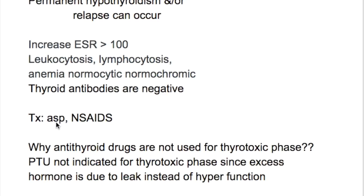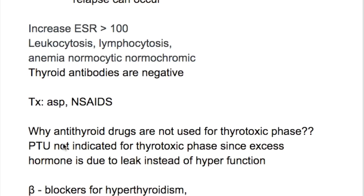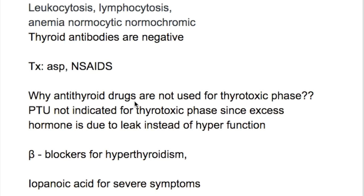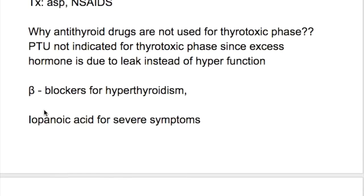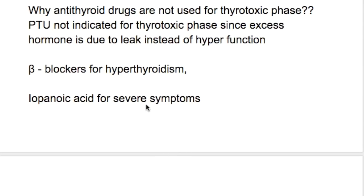Treatment is aspirin and NSAIDs. Why are antithyroid drugs not used for the thyrotoxic phase? Antithyroid drugs like propylthiouracil are not indicated for the thyrotoxic phase since the excess hormone is due to leakage rather than hyperfunction. The drug used for the thyrotoxic phase is a beta blocker, and for severe symptoms, iopanoic acid.